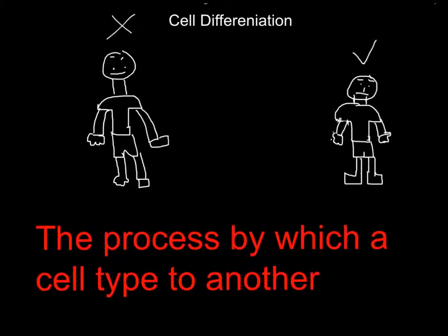As you can see here, there is a person on the left that has an X over the top, which means that he has no cell differentiation. His body didn't go through it. He has a leg and a foot as an arm, and he has an arm as a leg. And then the person on the right, his body is correct, even though I kind of messed up the arm.